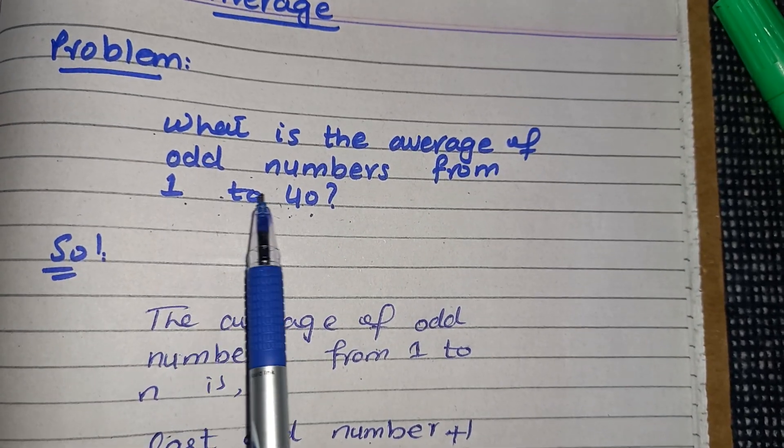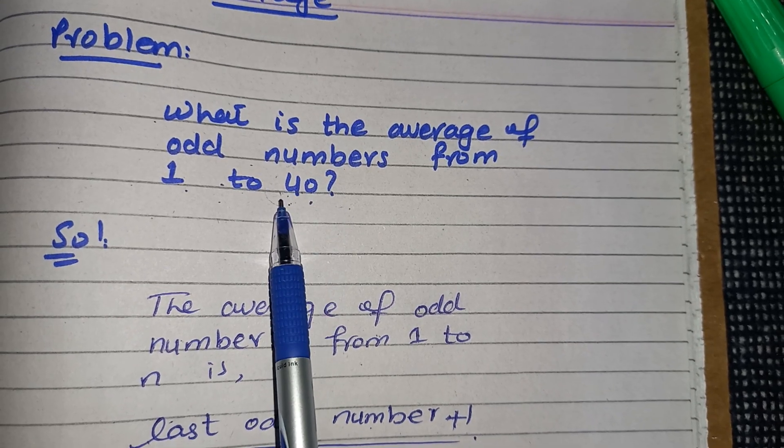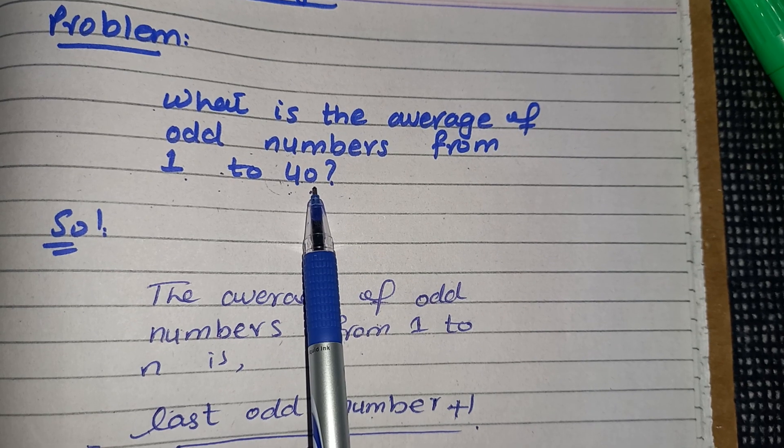Now students, we are given the odd numbers from 1 to 40, but you know 40 is not an odd number - this is an even number because it is a multiple of 2 and divisible by 2.